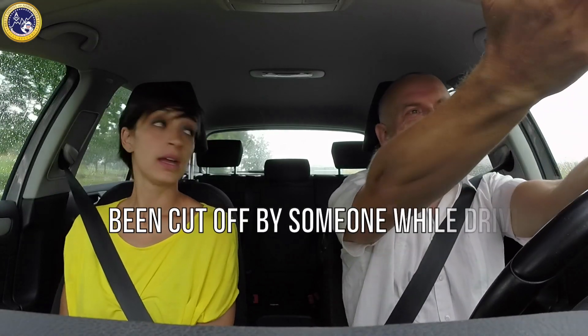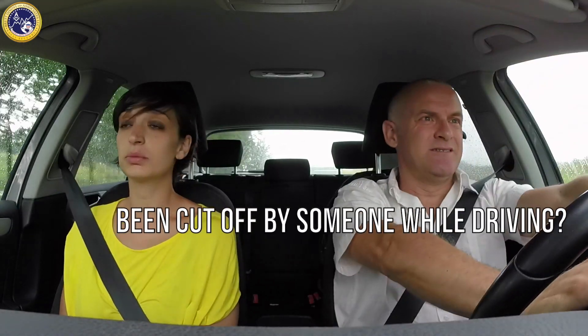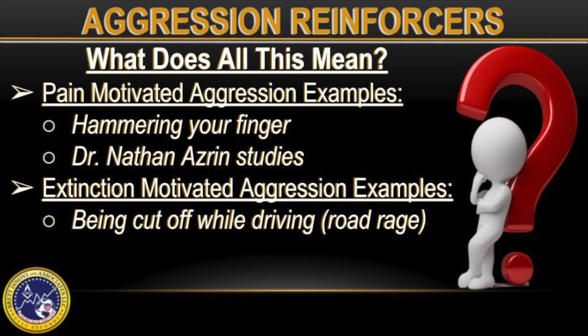Have you ever been cut off by someone while driving and yelled obscenities at them from your car? This is an example of extinction-motivated aggression. In this example, the aversive stimulus is your fast driving being placed on extinction as the individual pulls in front of you, which acts as a motivating operation, increasing the value of yelling obscenities as a reinforcer.